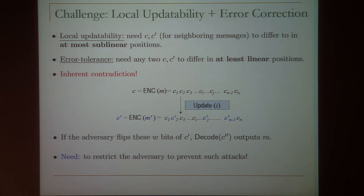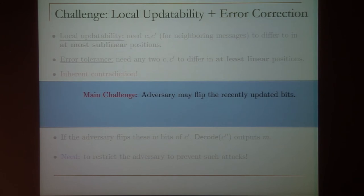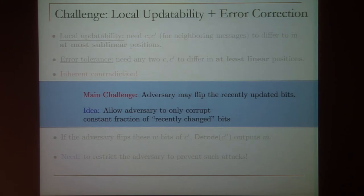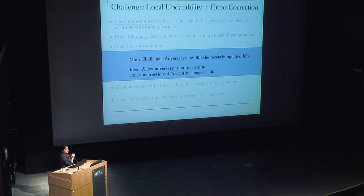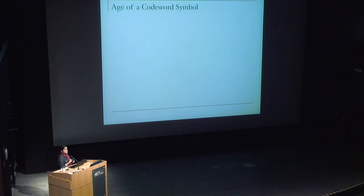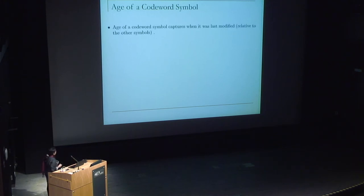Let's go back and see why we had this impossibility result in the first place. The main challenge is that the adversary could flip the bits that were recently updated. What we want to do is prevent such attacks. We'll allow the adversary to make a constant fraction of errors, but allow him to corrupt only a few of the recently updated bits so that we can prevent this attack. We're going to allow the adversary to only corrupt a constant fraction of the recently changed bits.